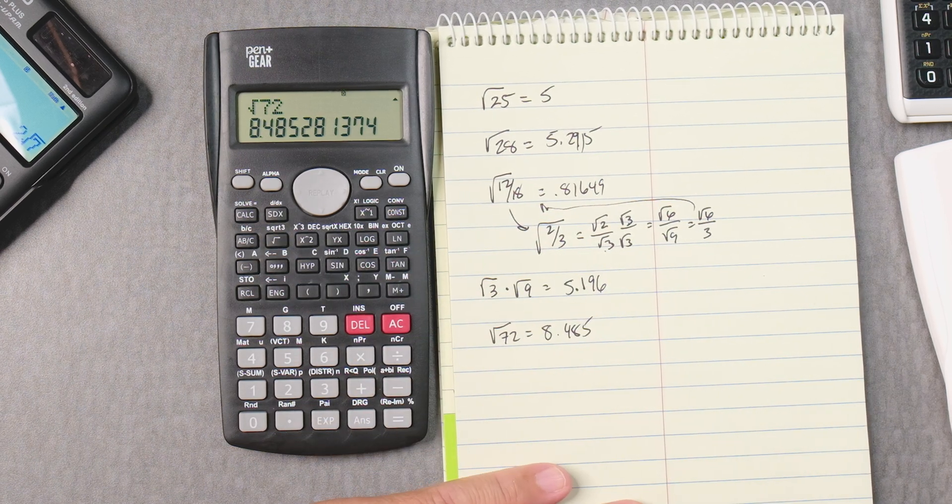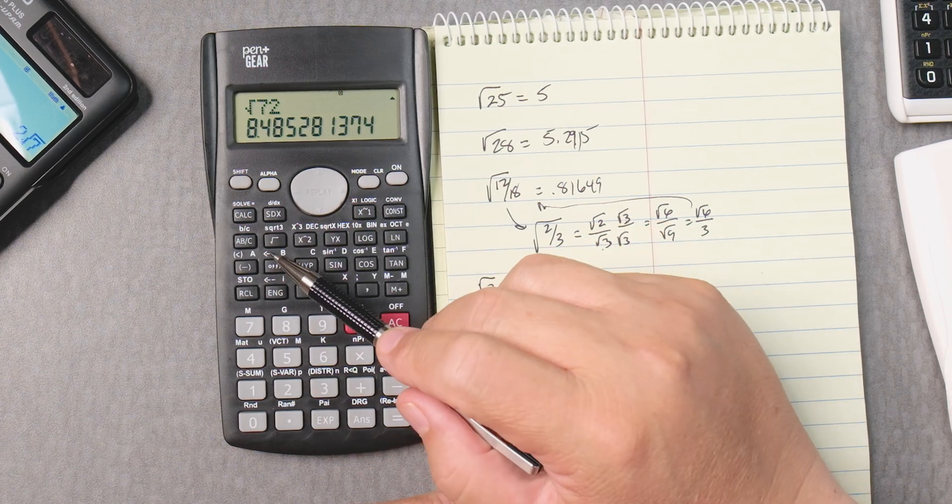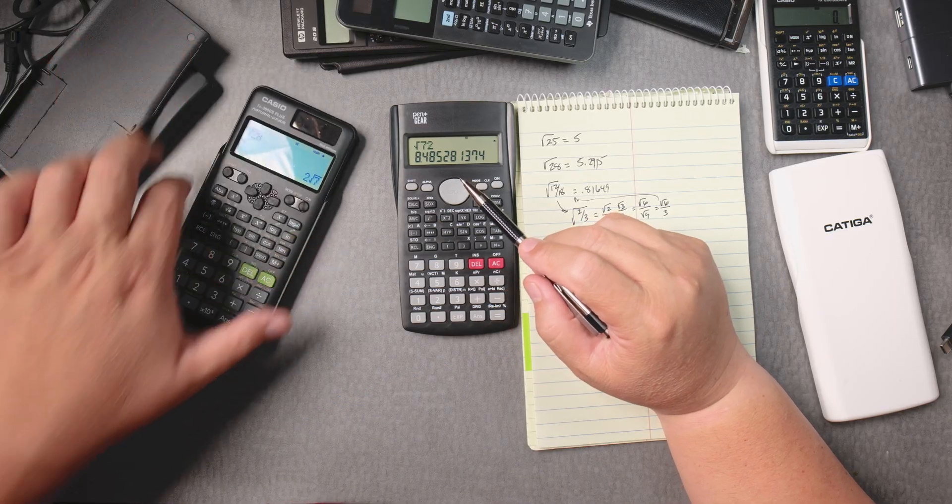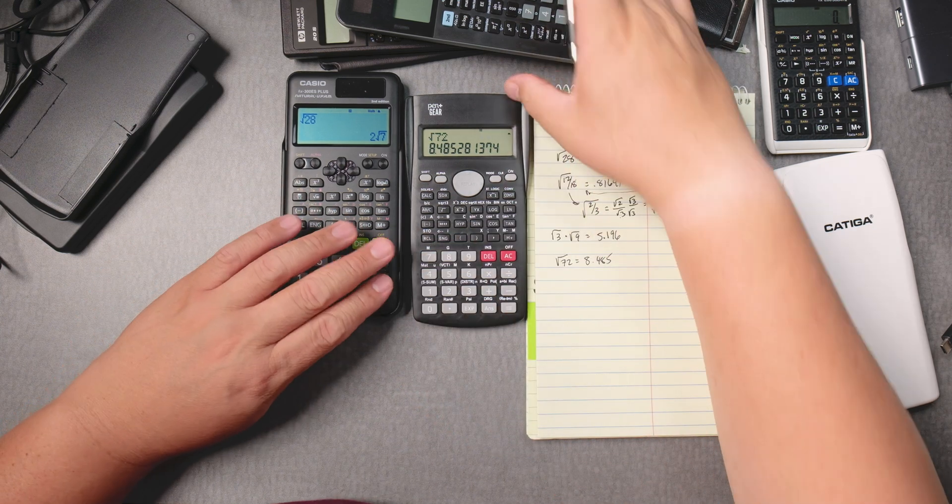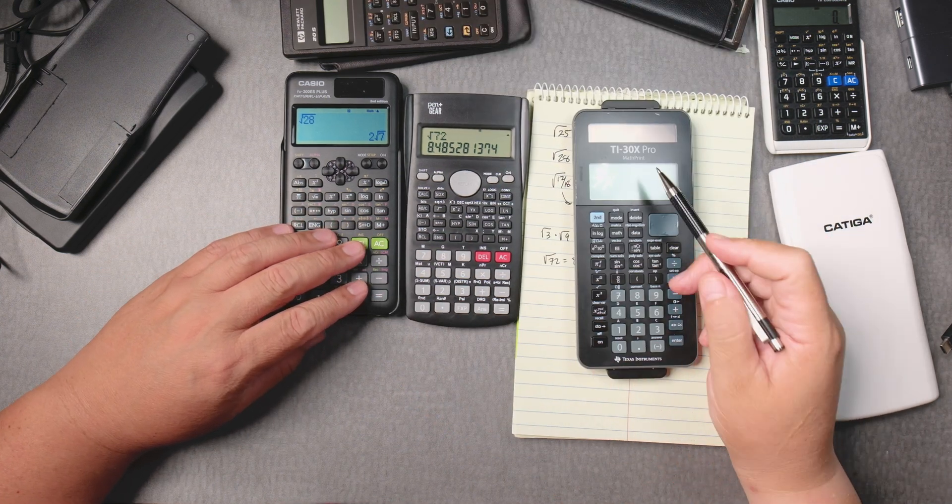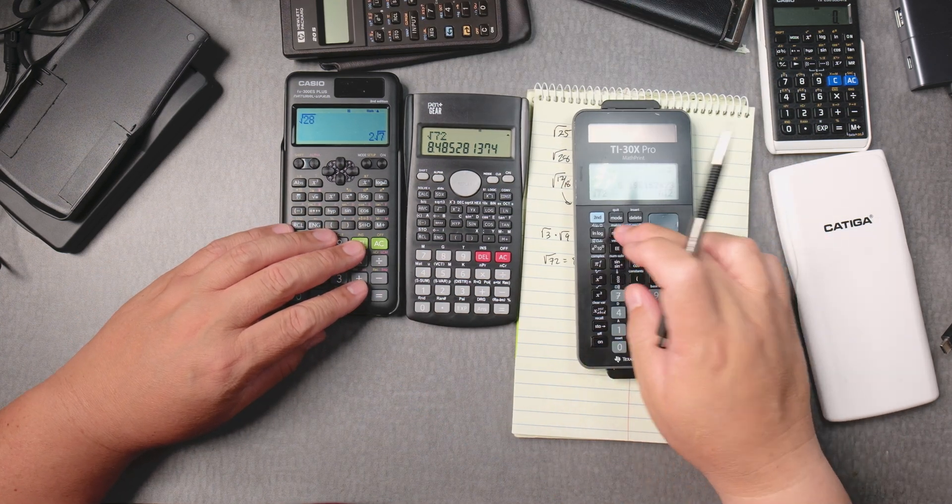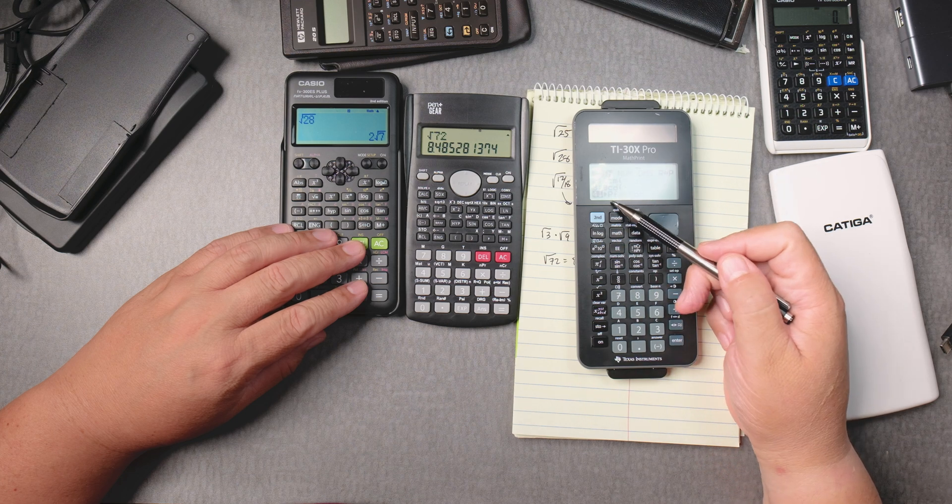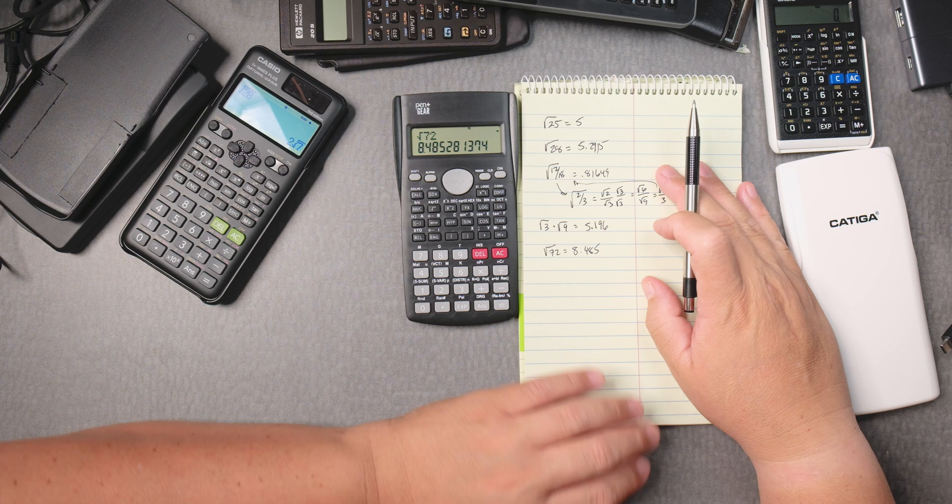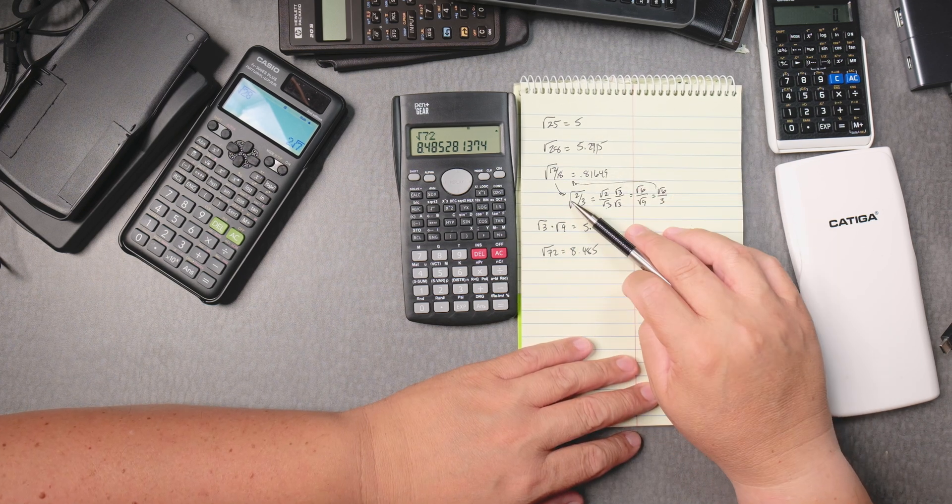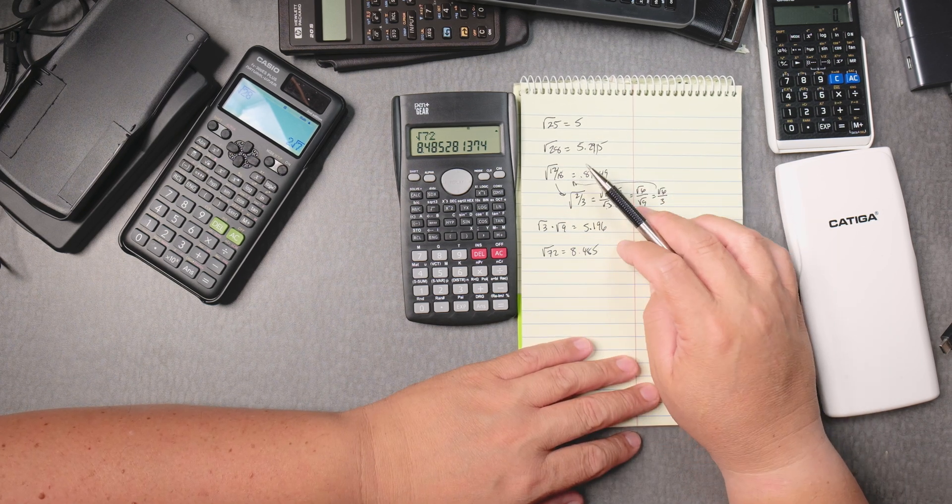But it doesn't have a prime factorization button like the Casio one does right here where it says fact or the TI-30 X-Pro which has a menu with a P factor. But these calculators have different purposes and this is how you do square roots on a Pen Plus Gear.